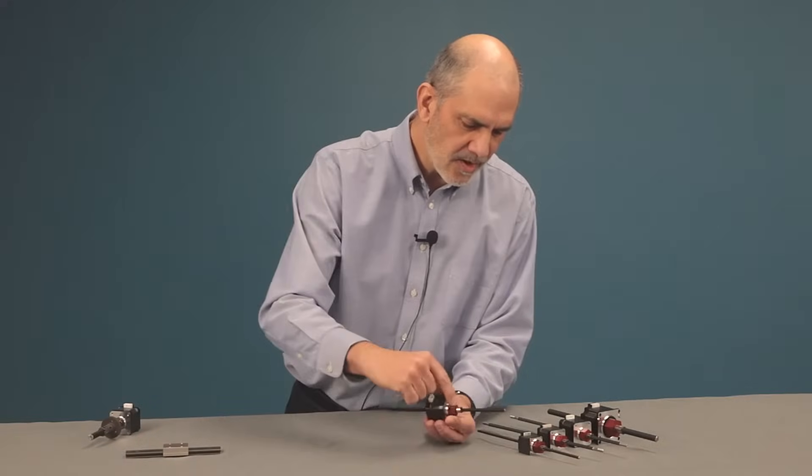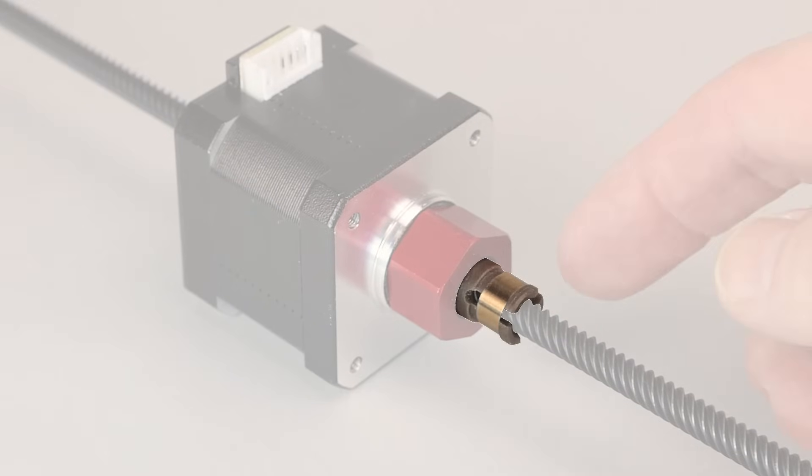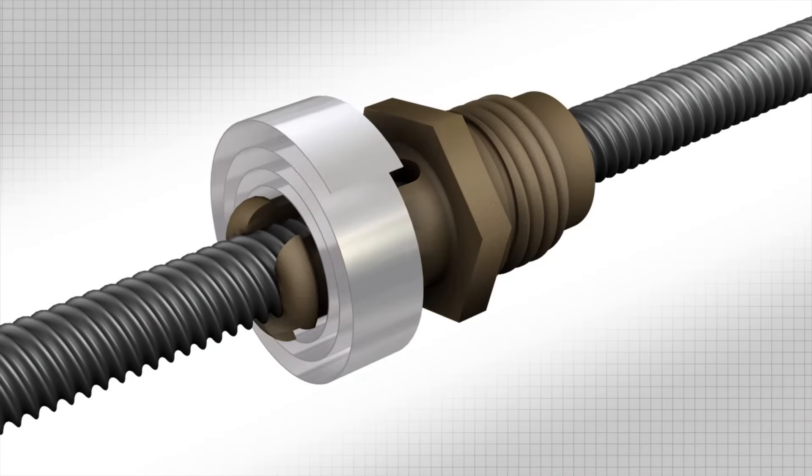In addition to that you'll notice that this nut here has a band around it, a spring around there. Most non-captives don't have any kind of anti-backlash control.